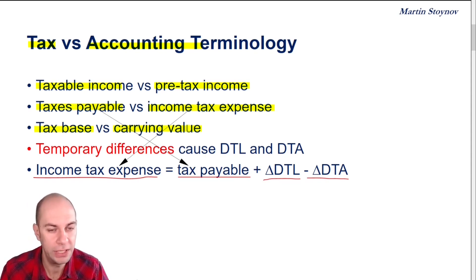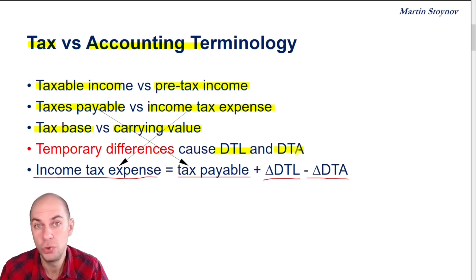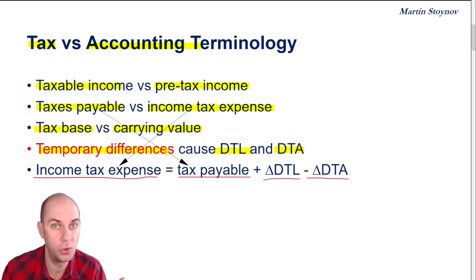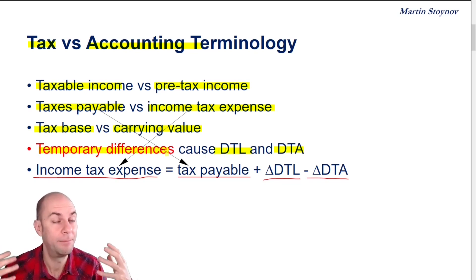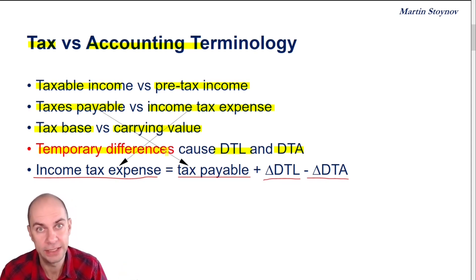Then we've got temporary and permanent differences. Most of this reading, we're going to be spending time on temporary differences, because it's the temporary differences that cause the deferred tax asset and the deferred tax liability. Permanent differences do not cause deferred taxes, so we don't have to worry about them as much. Temporary differences are caused by differences between the financial report and the tax report — these are timing differences, and they are expected to reverse over the life of the asset or the liability.